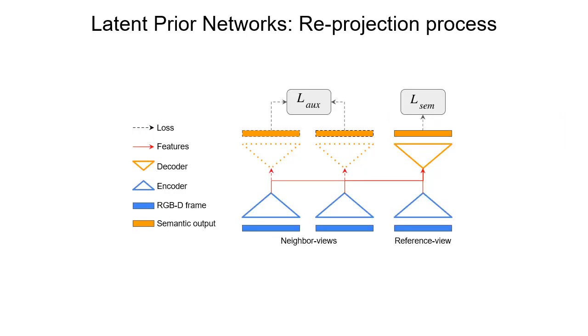Intermediate feature maps at multiple resolutions are reprojected and fused to the reference view. At training time, the views come in mini-batch mode, and for the neighboring views, we also predict semantic output for computing auxiliary loss.